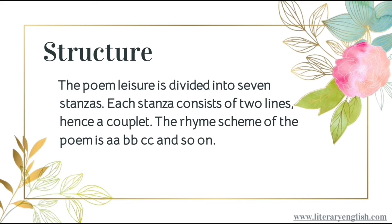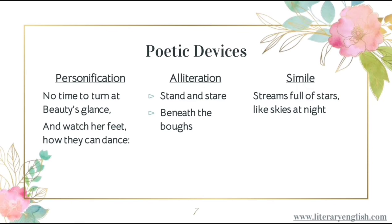Coming towards the poetic devices that are used in the poem, the first poetic device we are going to talk about is personification. Personification is giving human attributes to non-human things. In the following lines for example: 'no time to turn at beauty's glance and watch her feet how they can dance.' The poet has given beauty the attributes of human beings, like glancing and dancing.